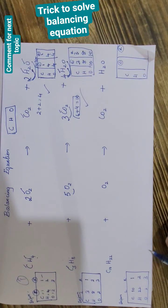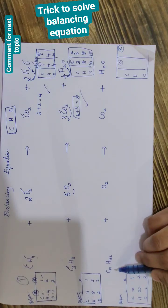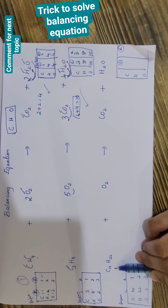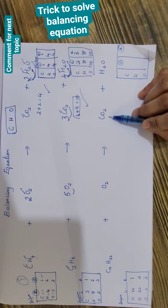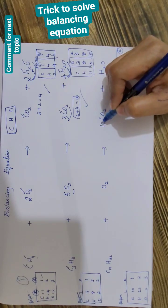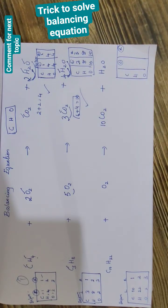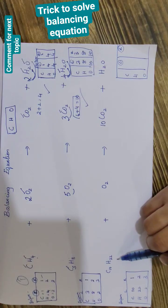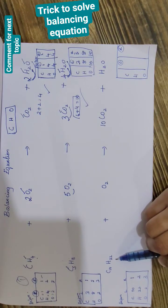Now we will go for the next question with a bigger number. We have ten carbons on the left side, whereas one carbon on the right side. So I write ten in front of carbon — my carbon is balanced. Now we will go for hydrogen. We have 22 hydrogens on the left side.